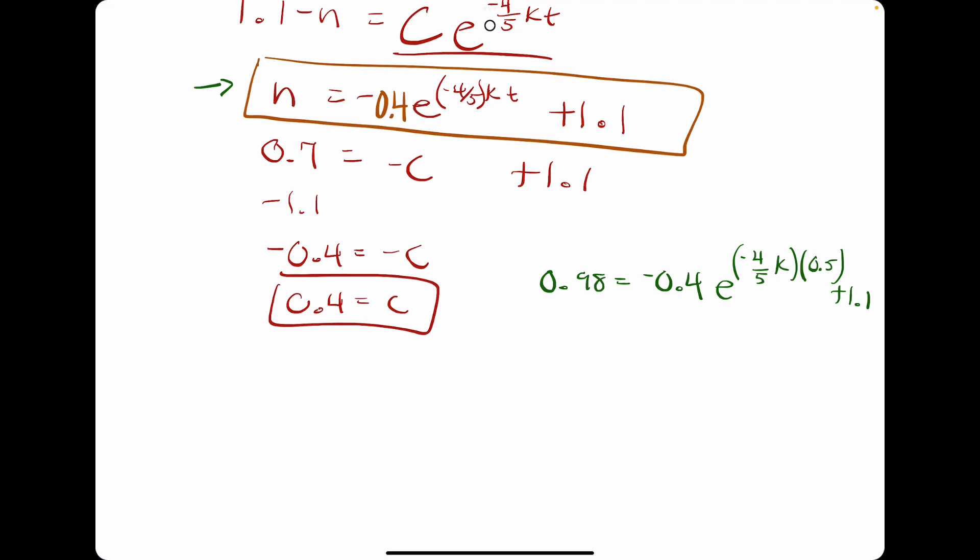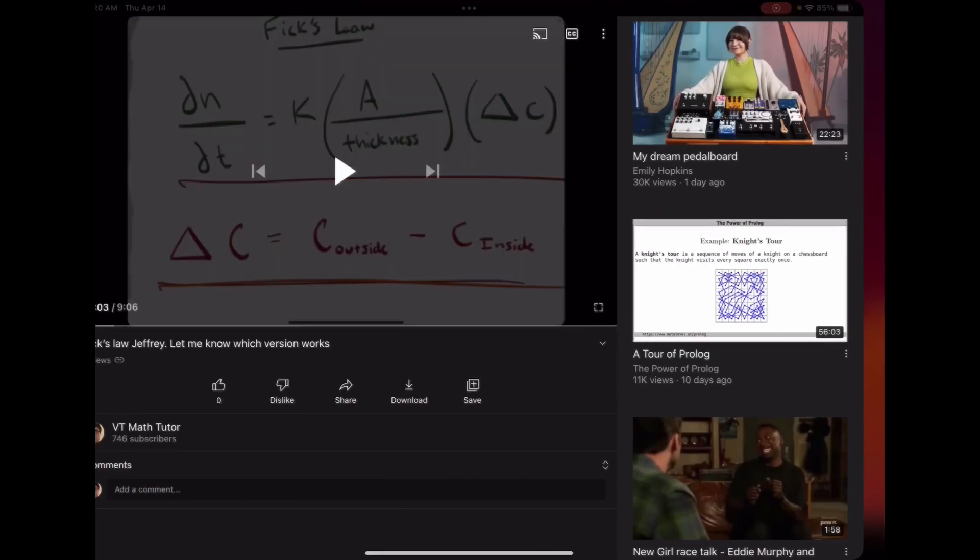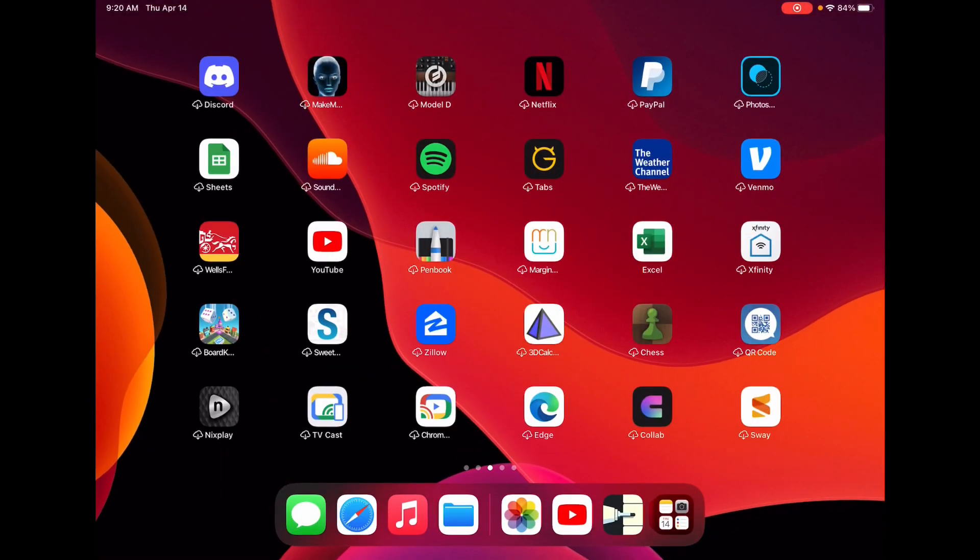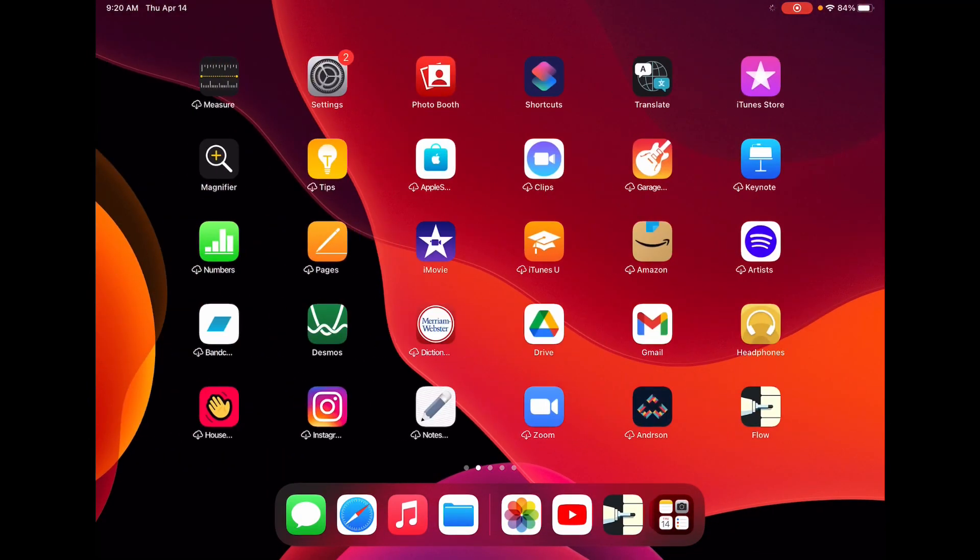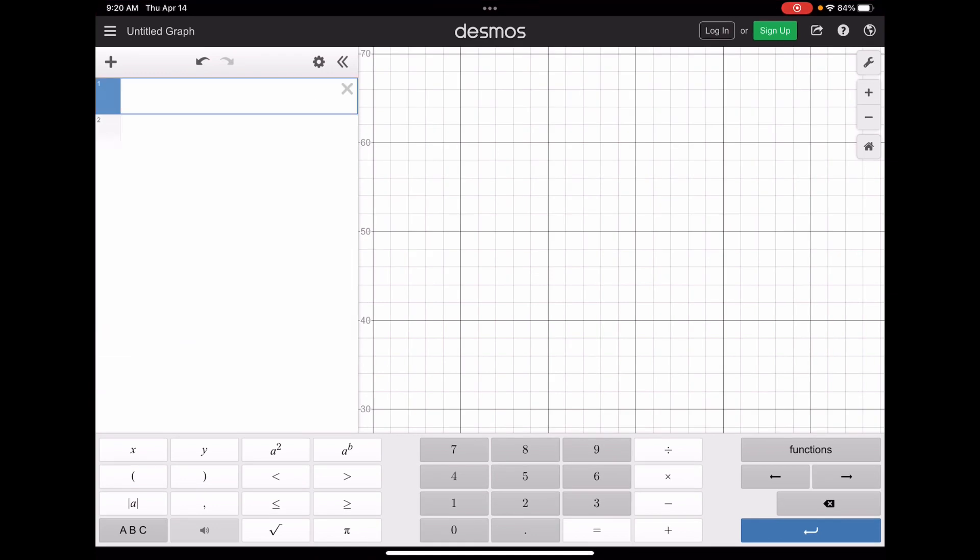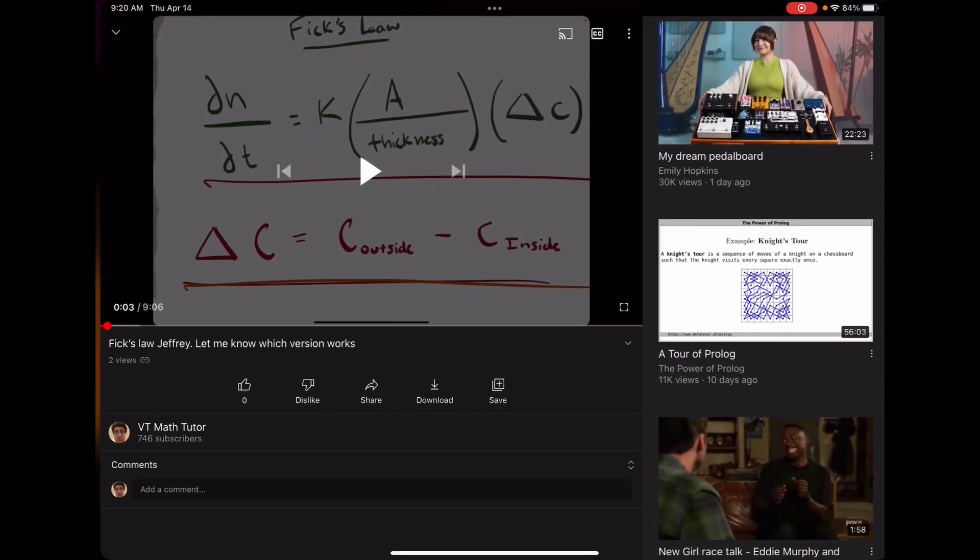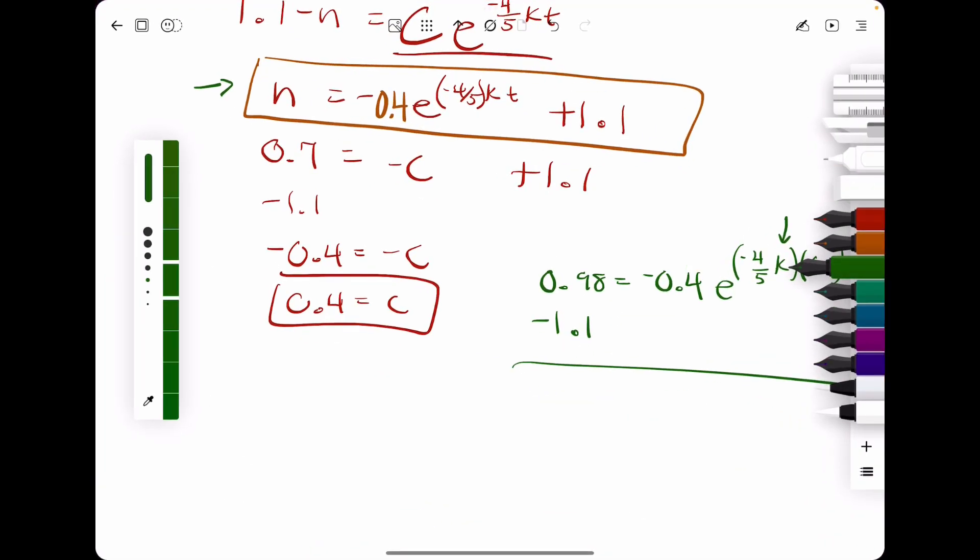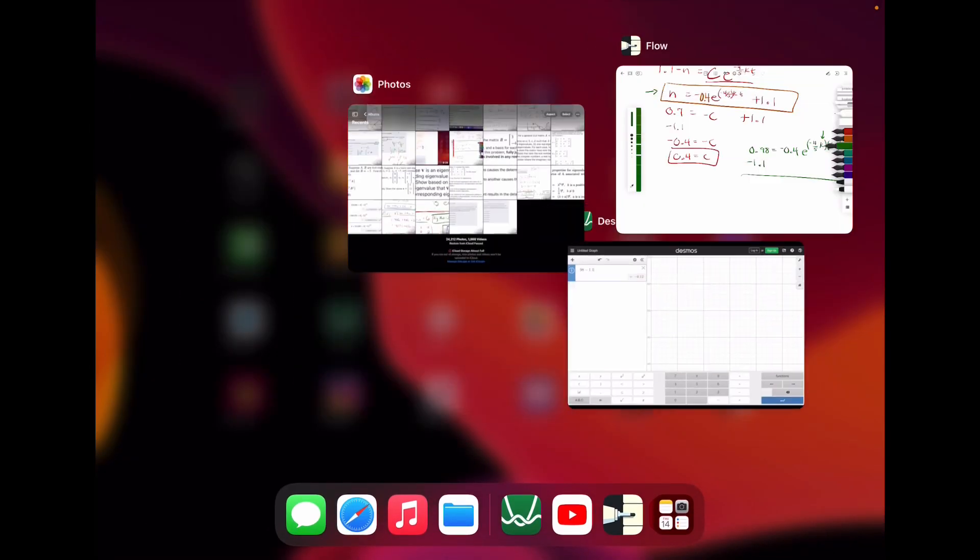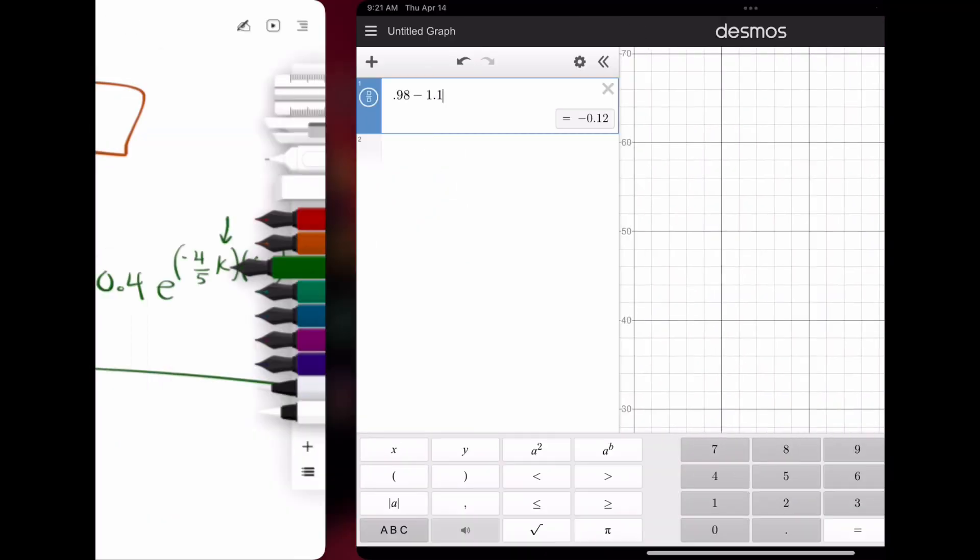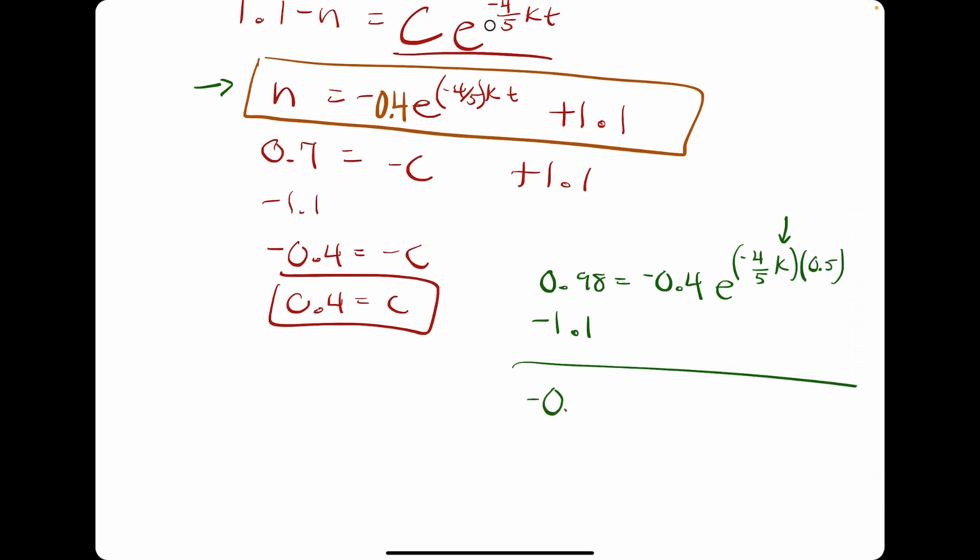So let's go ahead and start by subtracting 1.1. Our goal is to solve for this k. Hopefully once we have this k, we will be done. So subtracting 1.1. Let me make sure I do this with Desmos to not mess it up.